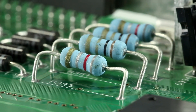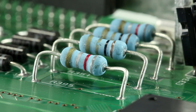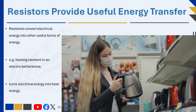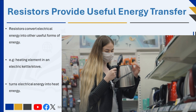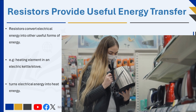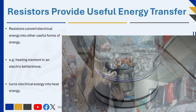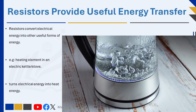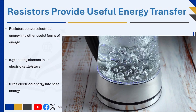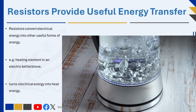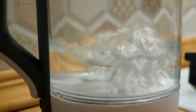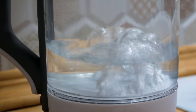Resistors are not just for controlling current — they also help convert electrical energy into other useful forms of energy. For example, the heating element in an electric kettle is a type of resistor. It turns electrical energy into heat energy, which is used to boil water. In this way, resistors help make appliances work as intended by managing energy transformation.